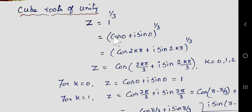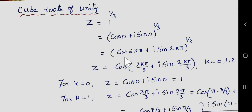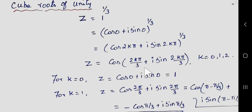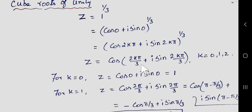First, write 1 in polar form: cos 0 + i·sin 0. Then add 2kπ with the argument and apply De Moivre's theorem — that gives us 2kπ × (1/3) = 2kπ/3. The last step is to assign values for k. Since n = 3, k takes the values 0, 1, and 2.